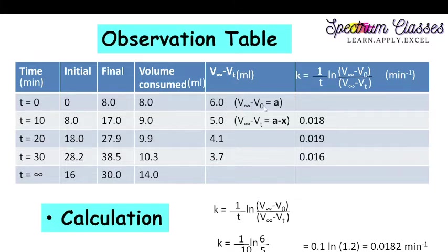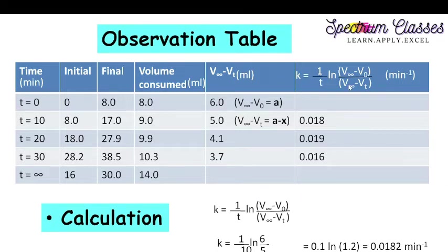In first-order kinetics, V∞ − V₀ behaves like the initial concentration 'a', and V∞ − Vₜ behaves like (a − x) at time t. The formula for a first-order reaction is: k = (1/t) · ln(a / (a − x)). So instead of 'a' I use V∞ − V₀, and instead of (a − x) I use V∞ − Vₜ. We will now verify whether this reaction follows first-order kinetics.